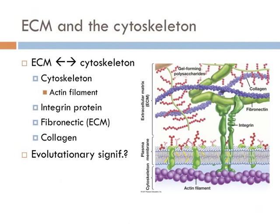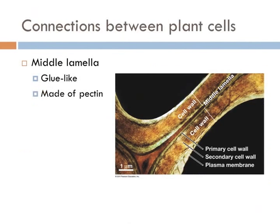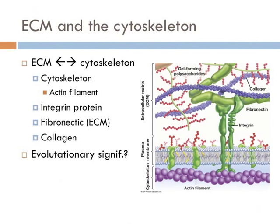A direct linkage between the cytoskeleton and ECM keeps individual cells in place and helps adjacent cells adhere to each other. This is how cells stay connected to each other and is one of the most important evolutionary advancements in the history of life on Earth. Without cells being able to connect to each other physically, multicellularity would have never been possible and life would still look a lot like soup.